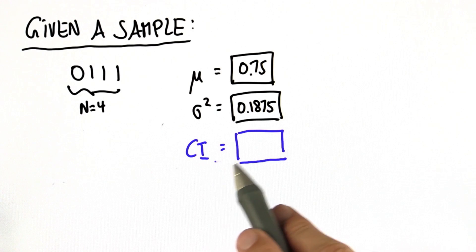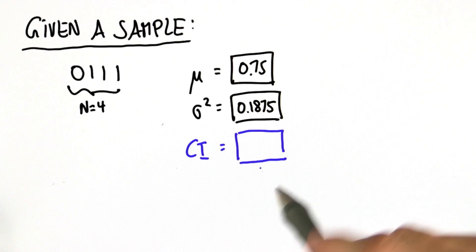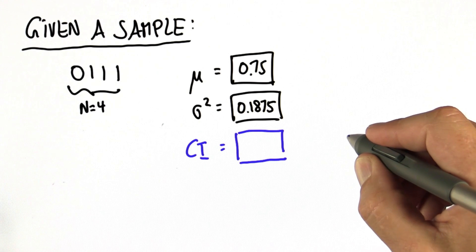In our magic formula, we can compute the plus-minus term of the confidence interval. And here's how it looks like.